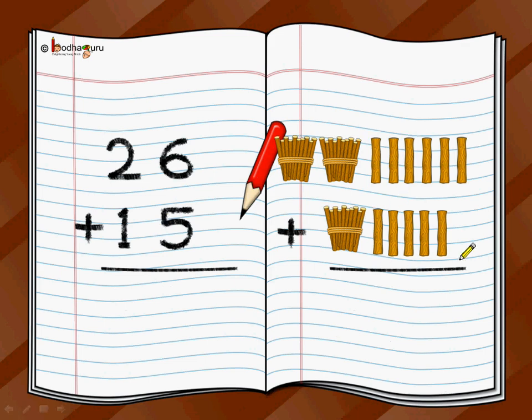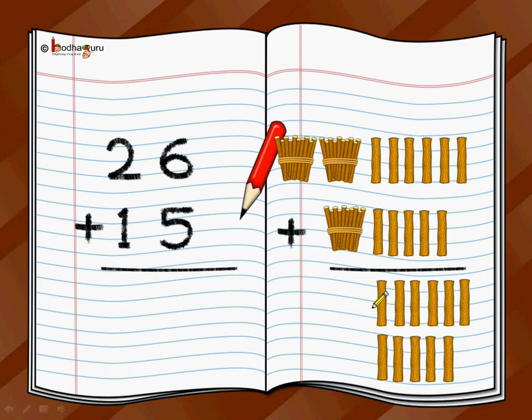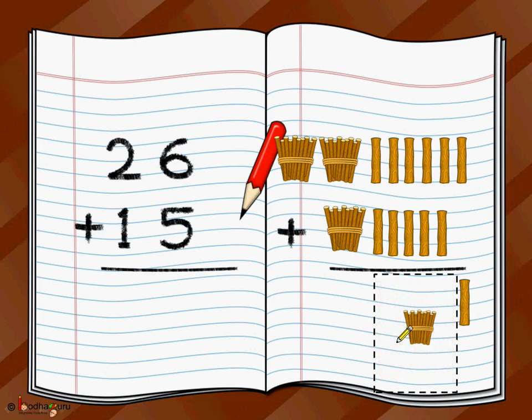Again, first we start from loose sticks. So we have now 1, 2, 3, 4, 5, 6, 7, 8, 9, 10, 11. We have 11 loose sticks, of which 10 sticks we are going to remove and form a bundle. And that bundle we move on top here, right?